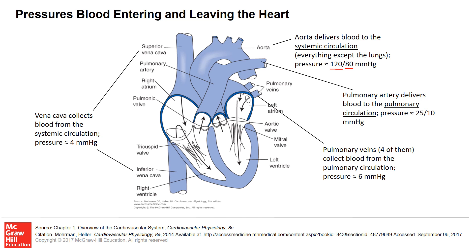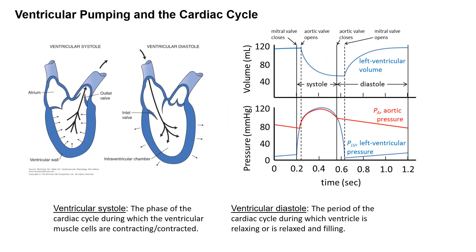Systolic and diastolic, what does that mean? Well, when a given chamber of the heart is contracting or is contracted, we call that systole. Here's a more formal definition of ventricular systole: the phase of the cardiac cycle during which the ventricular muscle cells are contracting or contracted.